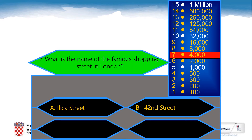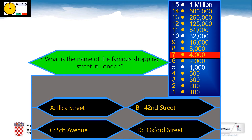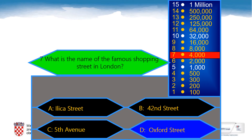The seventh question, worth 4,000 points, is: What is the name of the famous shopping street in London? A: Ilitsa Street, B: 42nd Street, C: 5th Avenue, D: Oxford Street. And the name of the street is, of course, Oxford Street.